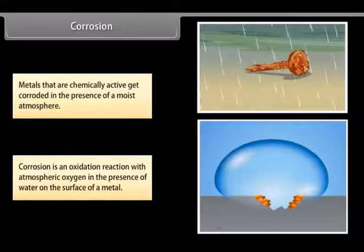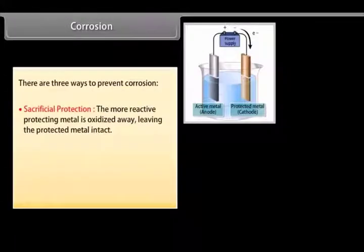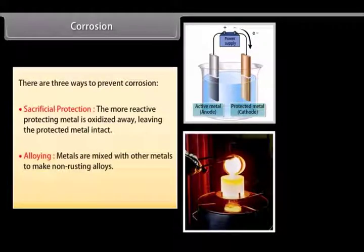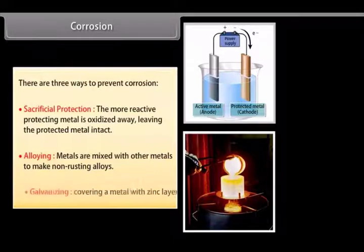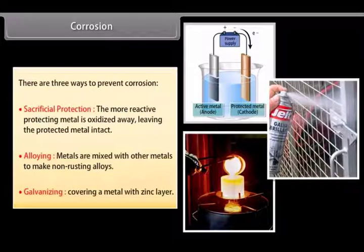However, non-reactive metals like gold, platinum, mercury do not corrode. There are three ways to prevent corrosion. Sacrificial protection where the more reactive protecting metal is oxidized away, leaving the protected metal intact. Alloying where metals are mixed with other metals to make non-rusting alloys. Galvanizing where a metal is covered in thin zinc layer. This layer is produced by electrolytic deposition.